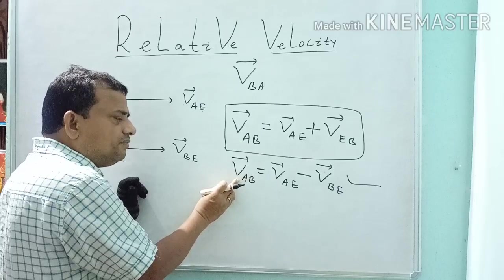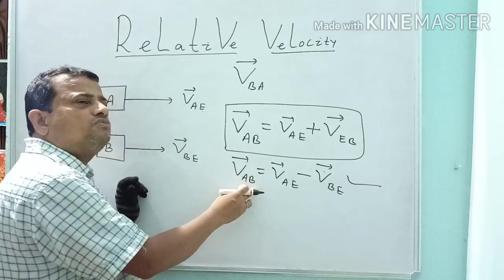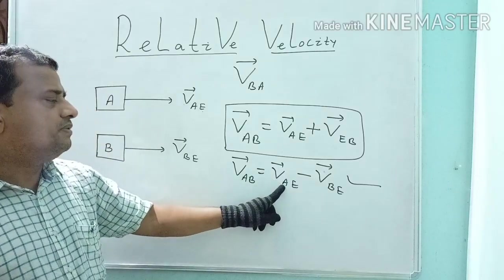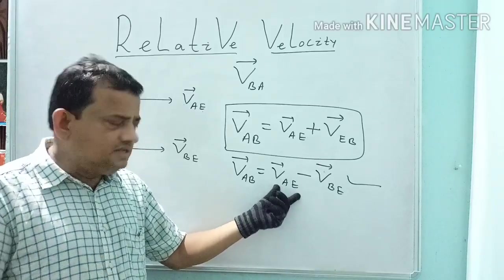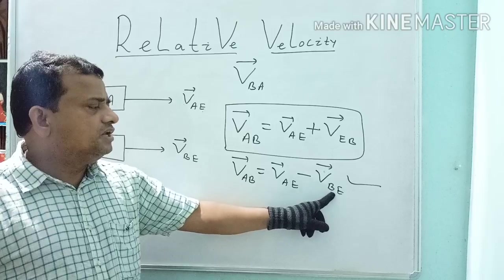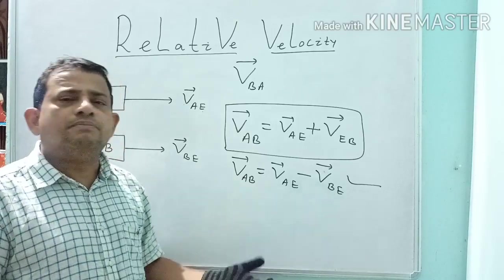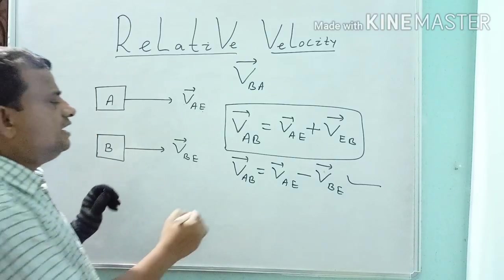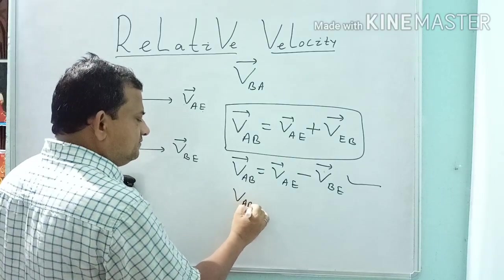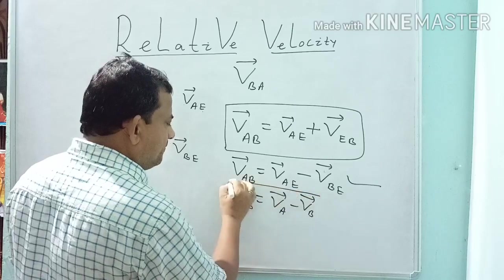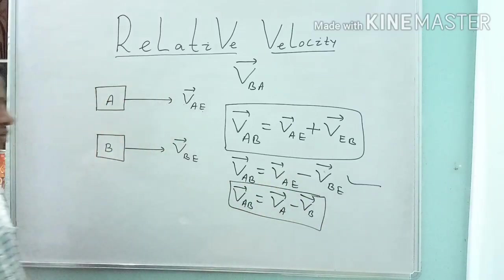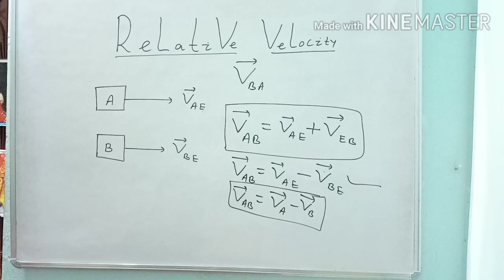So the formula is: velocity of body A with respect to body B equals velocity of A with respect to earth minus velocity of B with respect to earth. Simply, VAB = VA − VB. One can also write velocity of A with respect to B as VA vector minus VB vector.